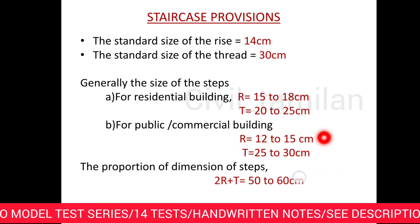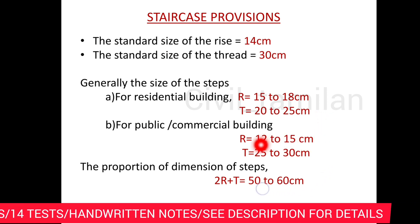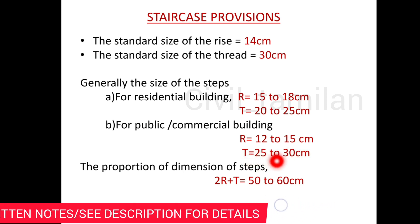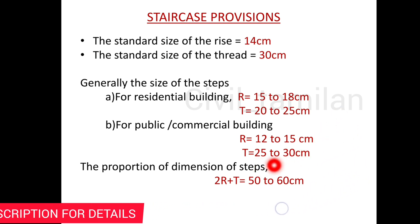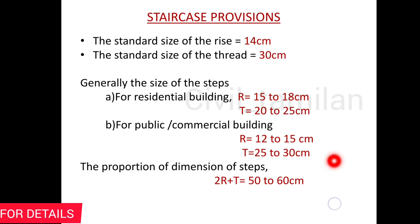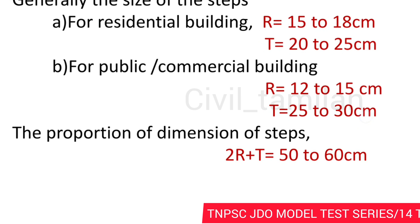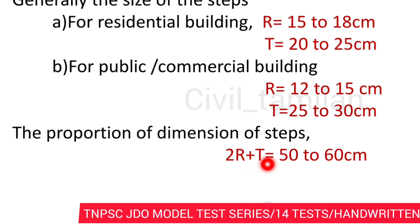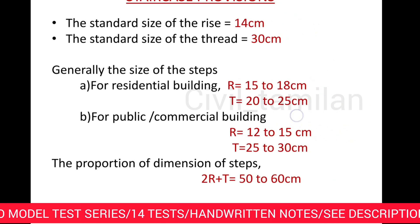The rise is 12 to 15 cm and the tread is 25 to 30 cm for residential buildings. For public or commercial buildings, the tread is 25 to 30 cm and the proportion of rise and tread steps should be maintained. The tread can range up to 25 to 60 cm in some references.